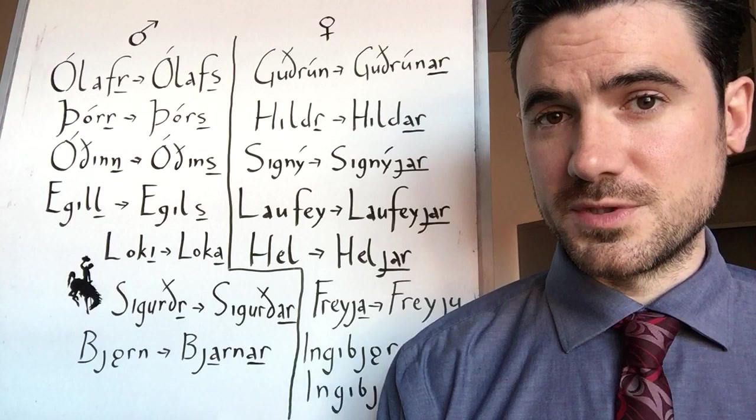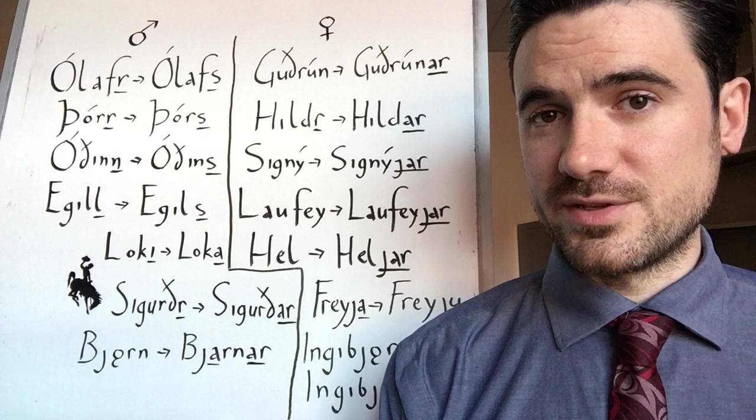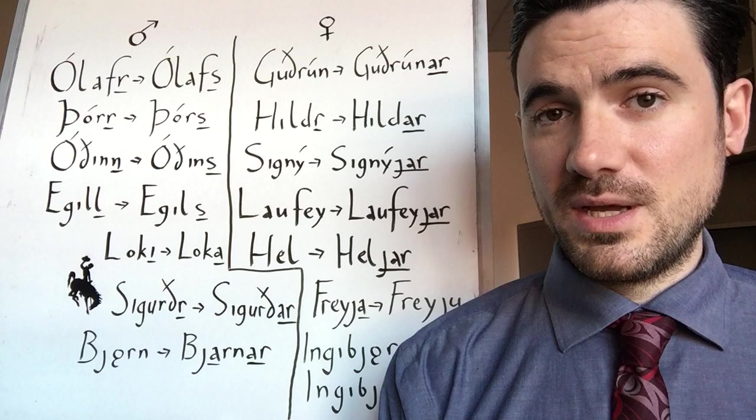As you can see, the typical possessive form of a masculine name is the root of that name plus an S, which is not unlike the English possessive form with apostrophe S. In fact, they're historically related. They come from the same root ending in the ancestor that Old Norse and English share.